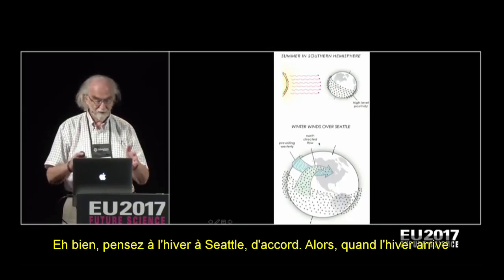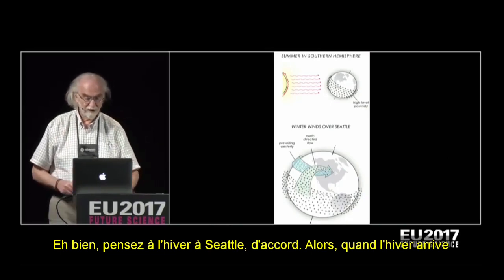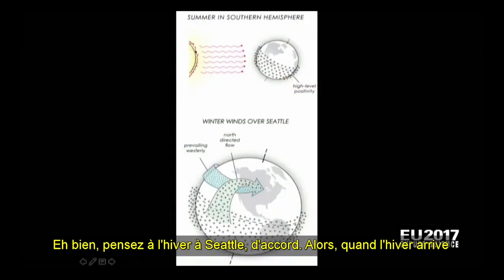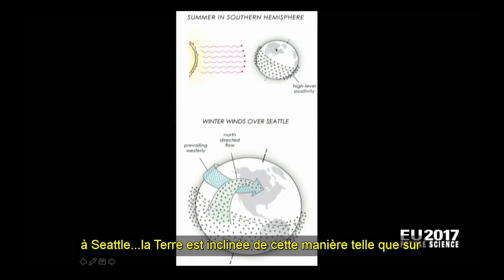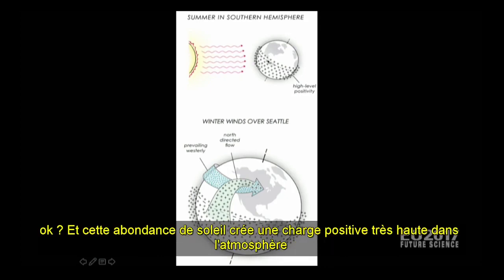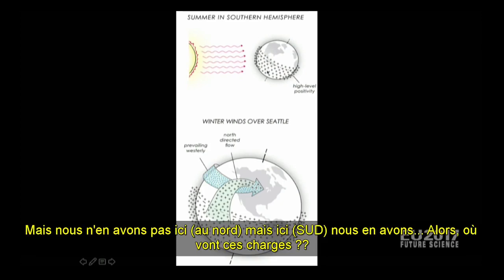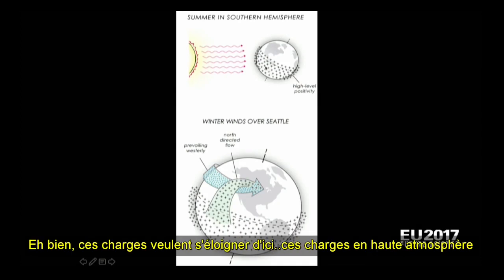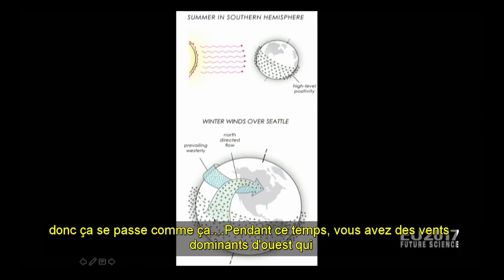Think about the winter in Seattle. When it's winter in Seattle, the earth is tilted such that in the southern hemisphere you've got a lot of sunshine occurring. And this lot of sunshine builds positive charge way up into the atmosphere. We don't get it here, but we get it there. Now where does this charge want to go? The charge wants to escape from the high atmospheric charge, so it goes this way.